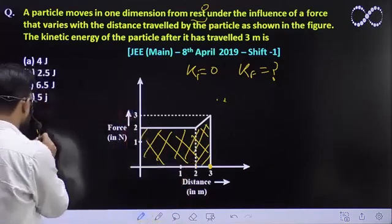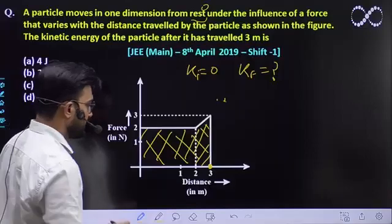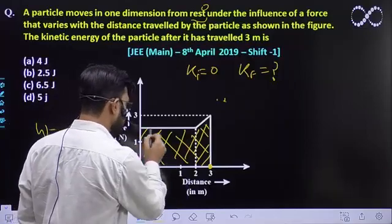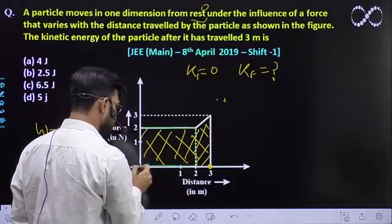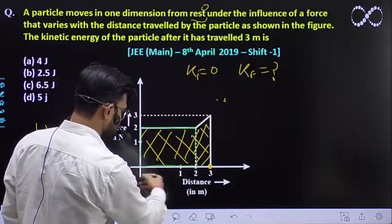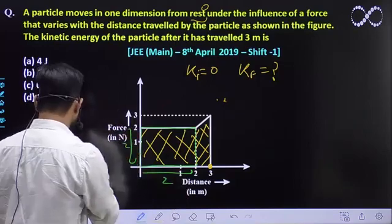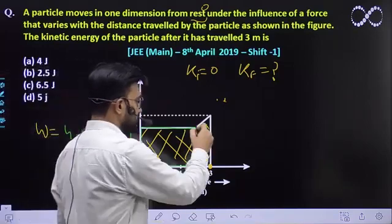So let's quickly calculate the area to find work done. What would be the work done? Work done would be - first we'll calculate this rectangle's area. So that will be 2 times 2, which is 4.